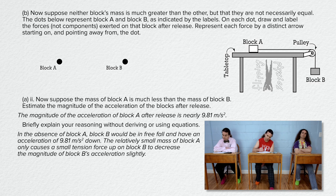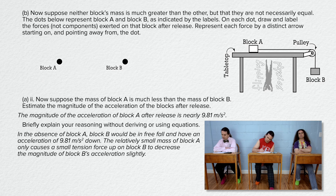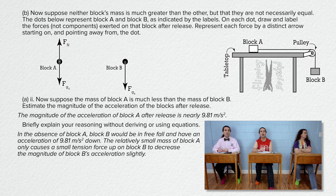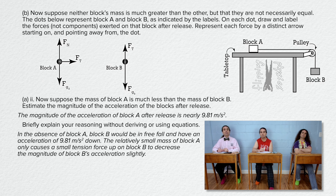Billy, please read and answer part B. Part B: Now suppose neither block's mass is much greater than the other, but they are not necessarily equal. The dots below represent block A and block B as indicated by the labels. On each dot, draw and label the forces — not components — exerted on that block after release. Represent each force by a distinct arrow starting on and pointing away from the dot. Both blocks have a force of gravity acting down on them with subscripts A and B. Block A is on the table and has a normal force acting perpendicular to the surface and up on it. The tension force on block A is to the right, and the tension force on block B is up. There is no friction or any other forces, so those are complete free body diagrams.